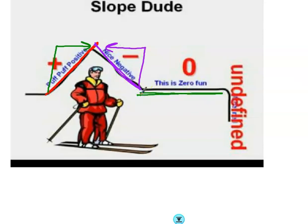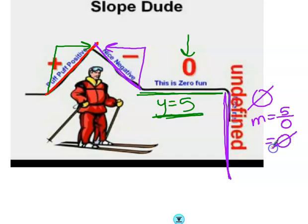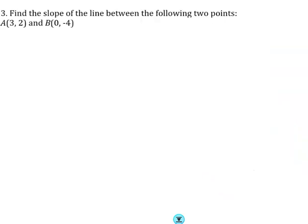A zero slope — Slope Dude calls it 'zero fun' — is just a flat horizontal line, like y equals 5, where there's no x coefficient. An undefined slope is different: if m equals five over zero, your calculator will say error. That's an undefined slope, like x equals 5, where the line goes straight up and down with no y-intercept.